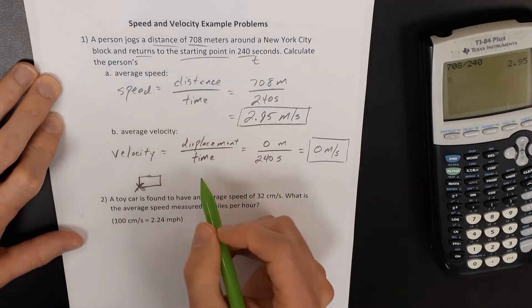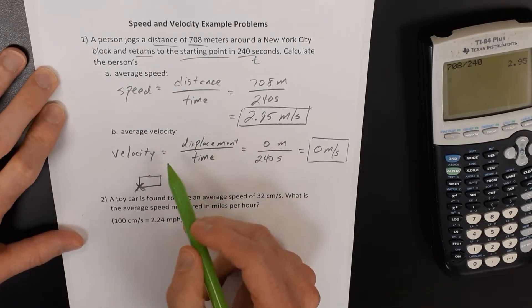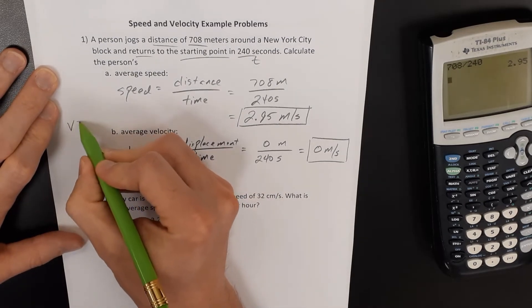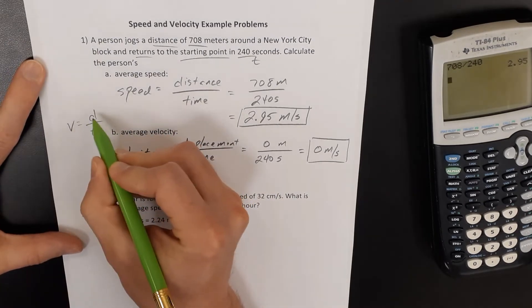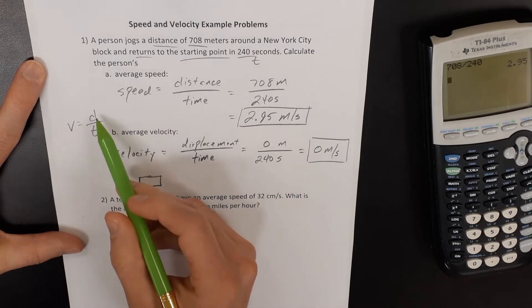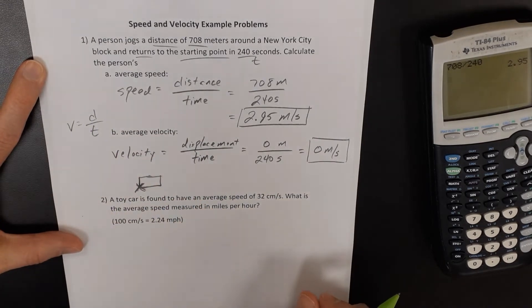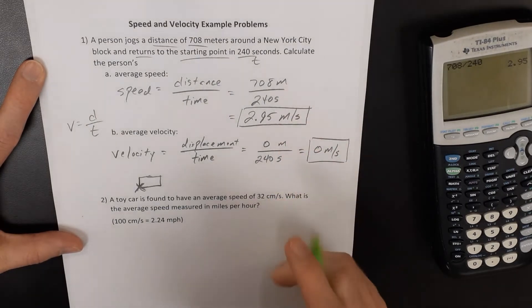Now both of these equations, speed is distance over time, velocity is displacement over time, both of them we typically abbreviate to say V equals D over T. That's a key difference in their definition between these two.